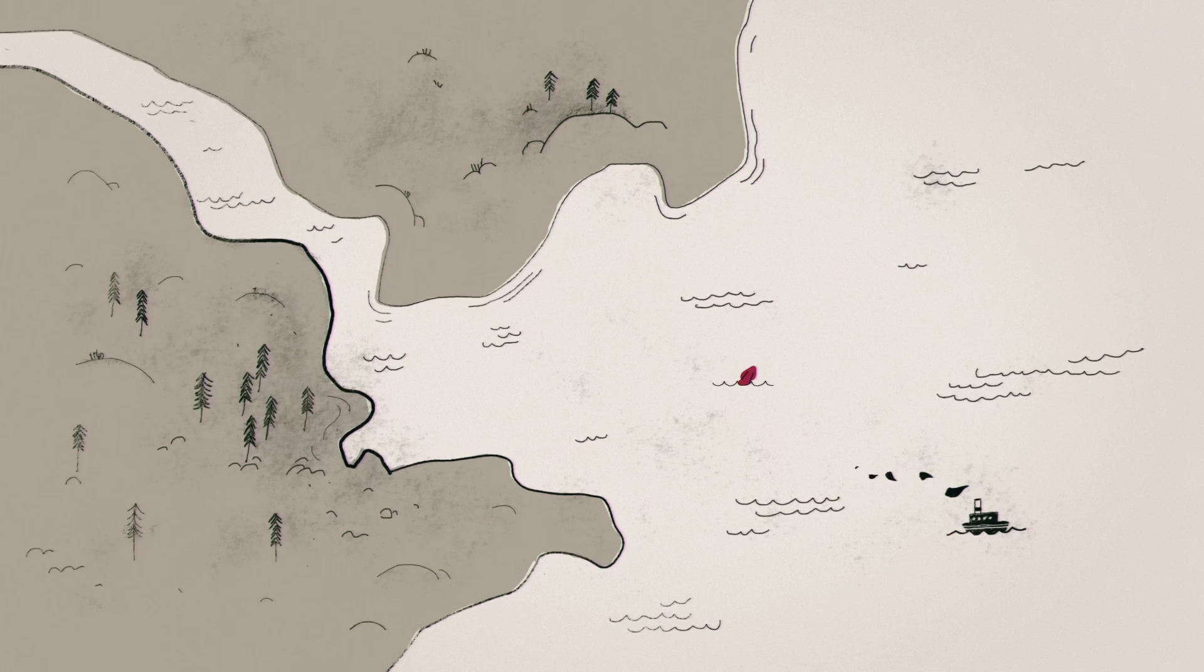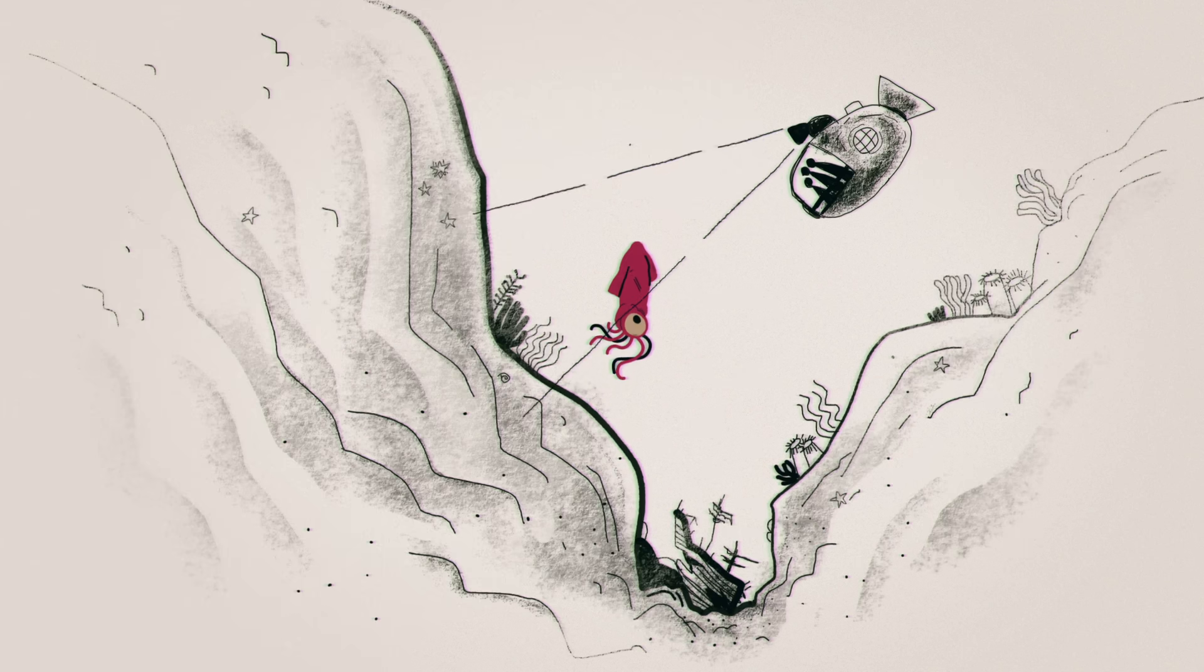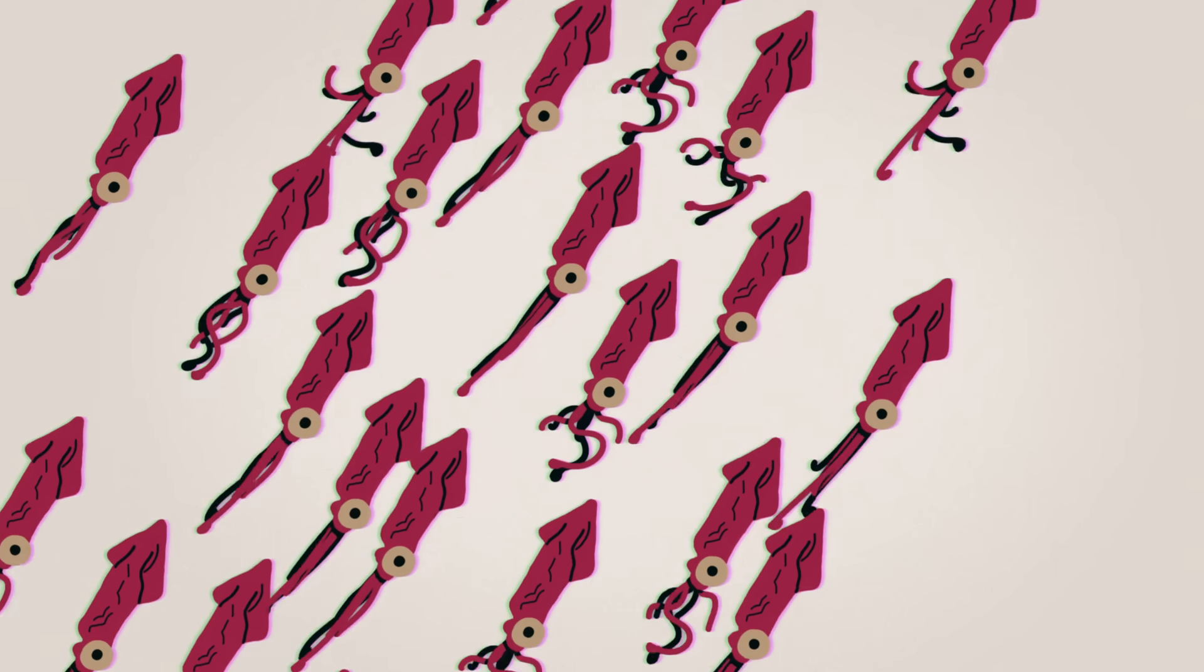Squid, which can be found mainly in estuarine, deep sea, and open water habitats, often swim together in shoals. Being out in the open without anywhere to hide makes them vulnerable,